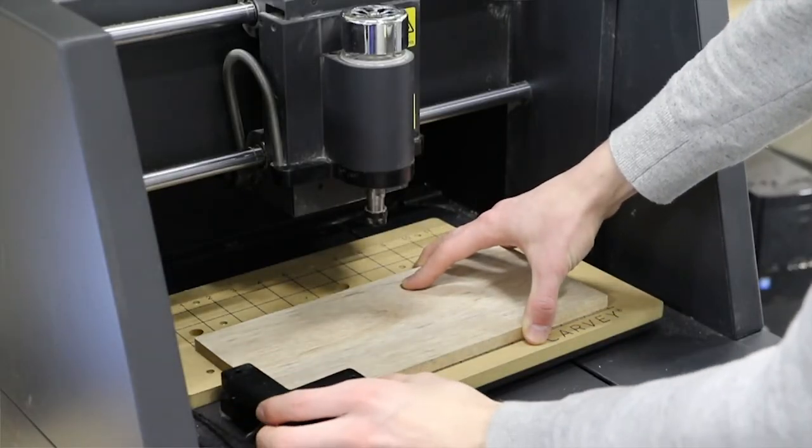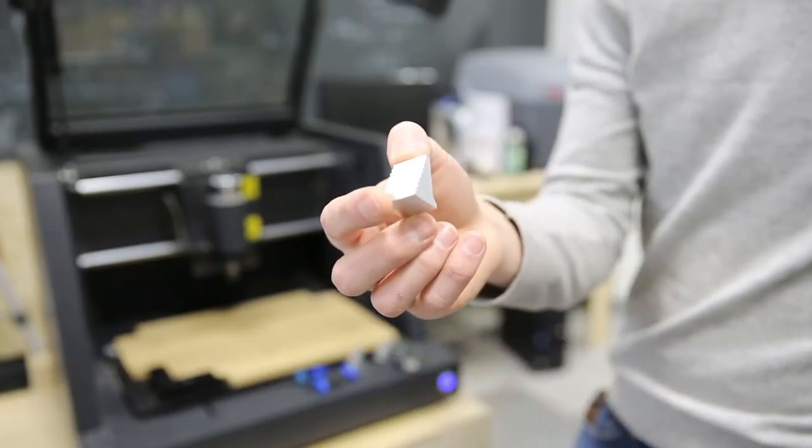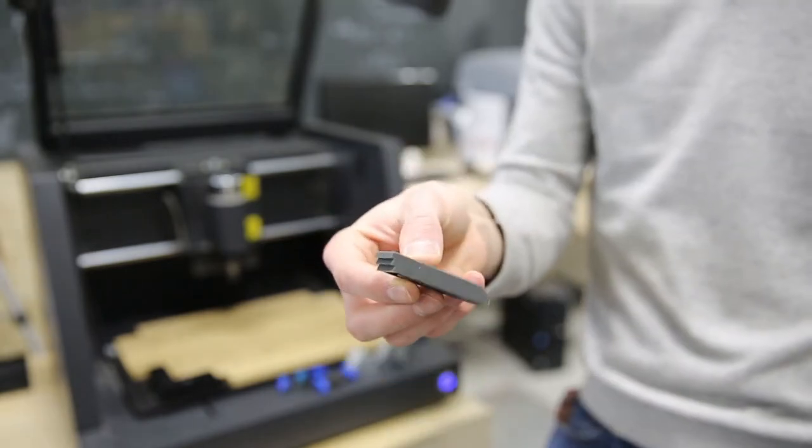With that information, I can begin securing my material to the table. Carvi comes with a wide variety of standoffs and hold-downs depending on the size of your project. Today we'll use the short aluminum standoff, the medium-length hold-down, and the blue thumb screws.